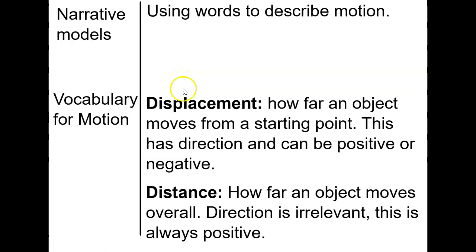For example, if you say that something's going fast or slow, you're describing motion using words. So here's some of the more specialized vocabulary having to do with motion. We'll start with displacement. Displacement is basically how far an object moves from wherever it started.